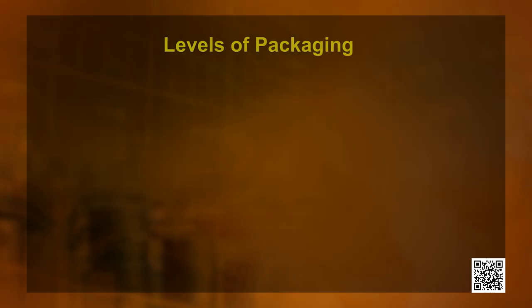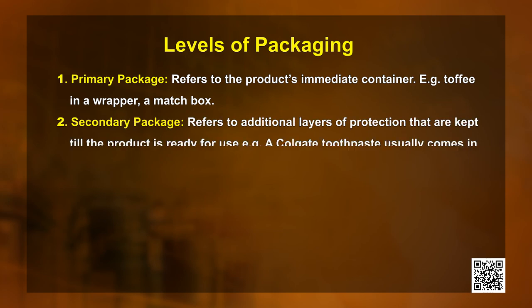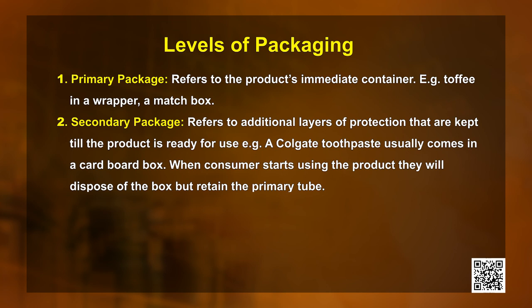The next element of product mix is packaging. It refers to designing and producing the container or wrapper of a product. Good packaging often helps in selling the product, so it is called a silent salesman. Packaging has three levels. First, primary package: the product's immediate container — for example, a toffee in a wrapper or a matchbox. Second, secondary package: additional layers of protection kept until the product is ready for use — for example, a Colgate toothpaste comes in a cardboard box, which the consumer disposes of while retaining the primary tube.